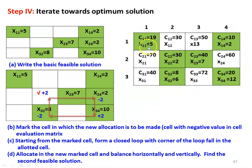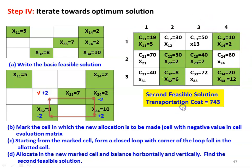Once again we check the number of allocations: 1, 2, 3, 4, 5, 6. There are 6 allocations and they are independent, not forming a closed loop. The second feasible solution transportation cost is calculated as C11·X11 + C14·X14 + C22·X22 + C23·X23 + C32·X32 + C34·X34, which equals rupees 743.